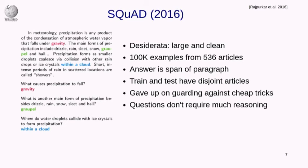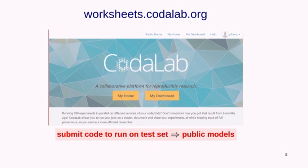We gathered 100K examples, which was much larger than other datasets for question answering and reading comprehension at the time. We also built a platform called CodaLab to allow people to submit code and run reproducible experiments. To report test results on the SQuAD dataset, you had to submit your code. This led to a leaderboard full of publicly available models. In a little over a year, 30 different teams submitted to the leaderboard.